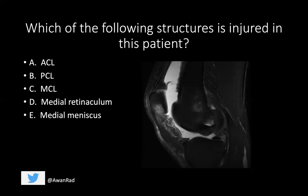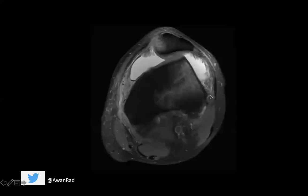In all those instances, the medial retinaculum will always be injured — that's why the answer is the medial retinaculum. Looking at the axial T2 fat sat image of the same patient, we can see the kissing contusions or bone bruises of the inferior medial patella and lateral femoral condyle. The medial retinaculum, which should be nice and linear with dark hypointense signal, is torn because we have fluid signal right at its attachment along the patella.